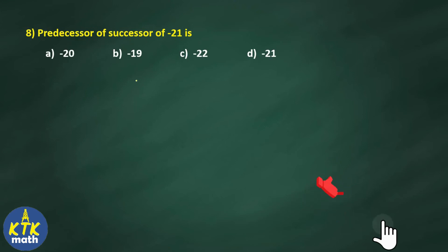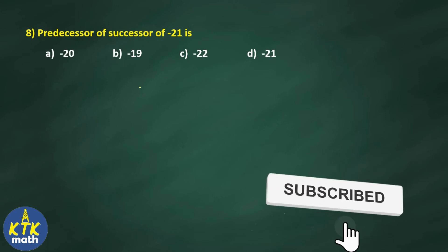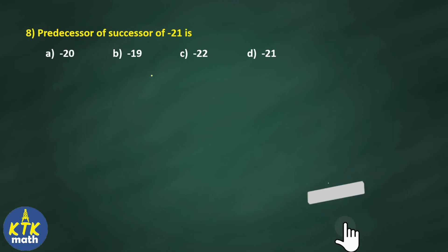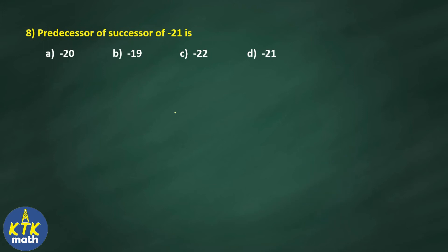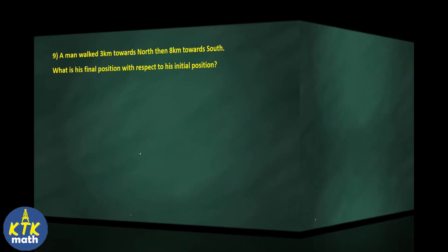Question number 8: predecessor of the successor of minus 21. The predecessor of the successor of any number is the same number. The successor of minus 21 is minus 20, and the predecessor of minus 20 is again minus 21. So the answer is minus 21.